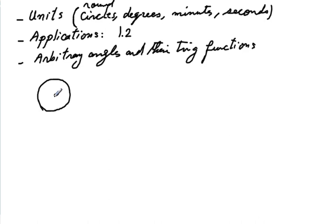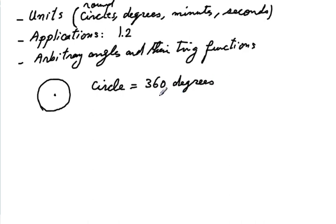When measuring large angles, you measure in terms of circles — how many times have you gone around the circle. For example, when talking about engine performance, you use rounds per minute; most car dashboards have an RPM gauge. A circle or round refers to one whole rotation. The most common measure for smaller angles is degrees, defined by saying a circle is 360 degrees.